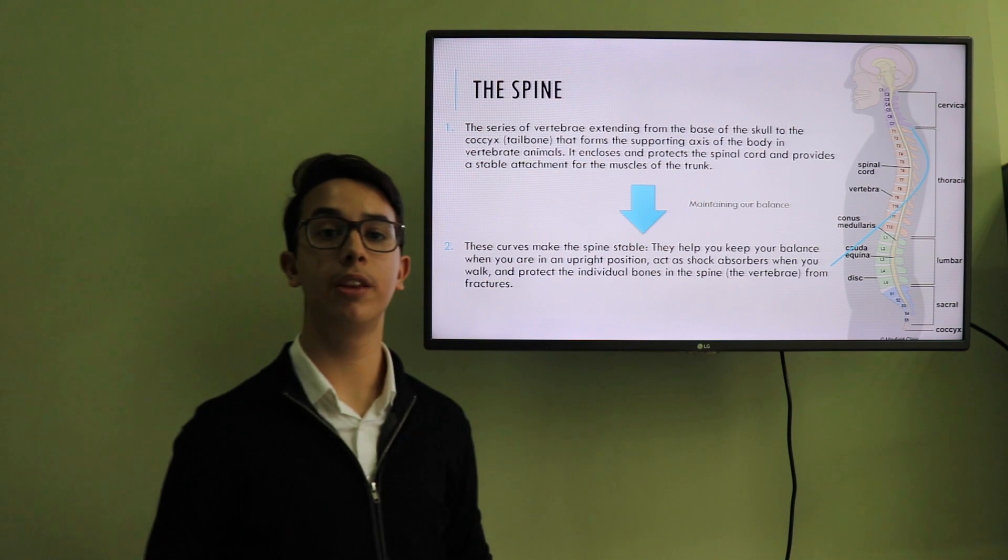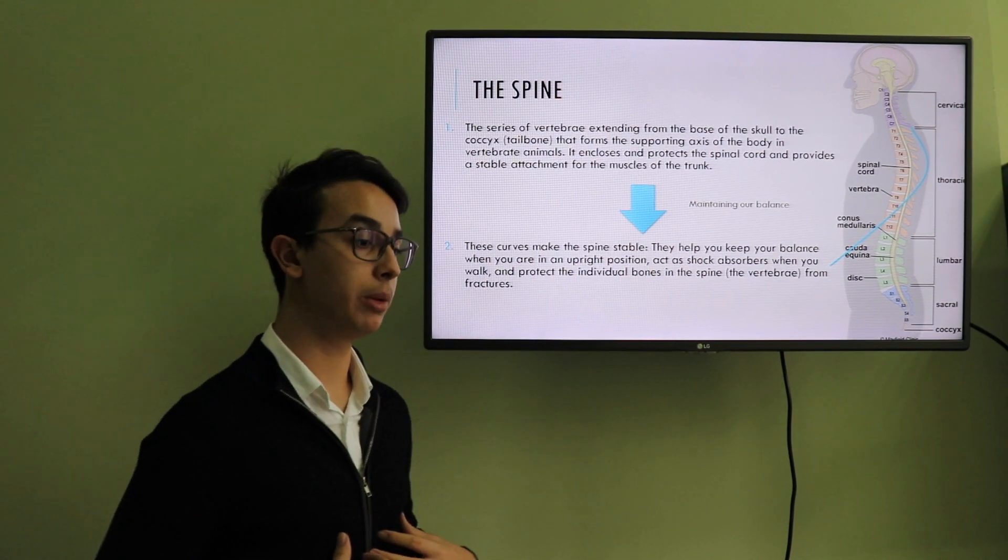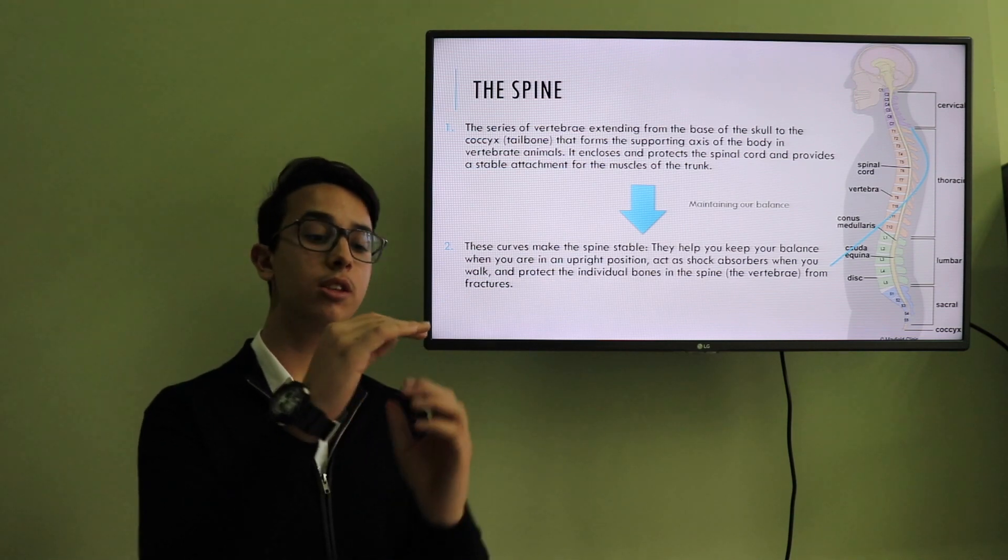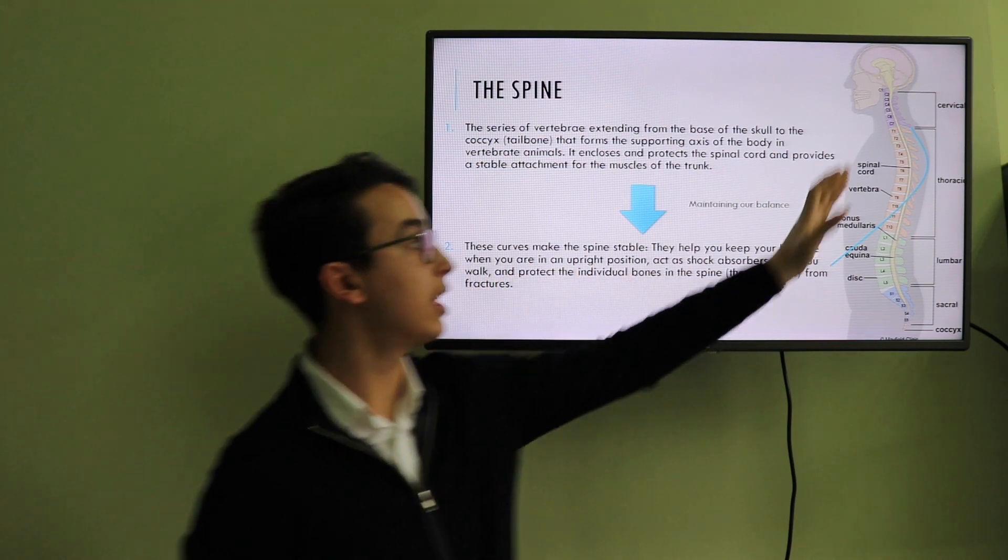The spine. What is the spine and how does it affect our balance? The spine affects our balance directly because the spine helps our body to keep the balance and causes the vertebra to break. The spine maintains our balance because these curves make the spine stable.